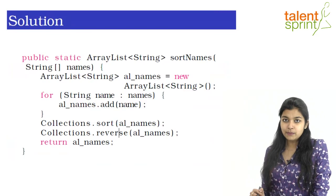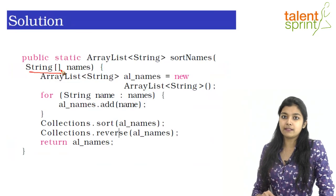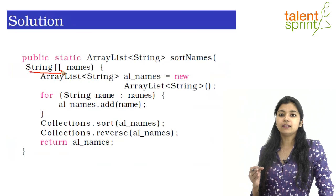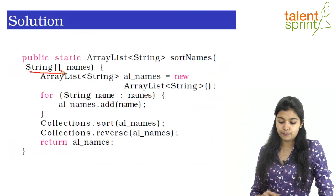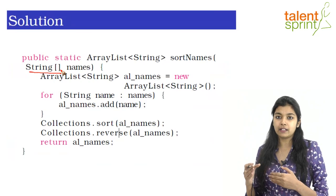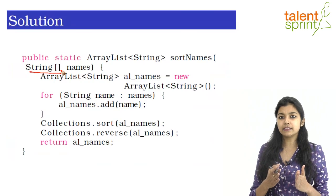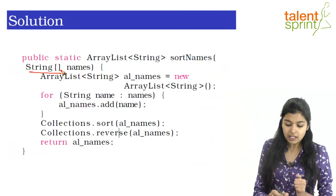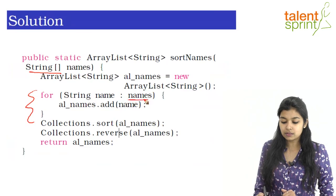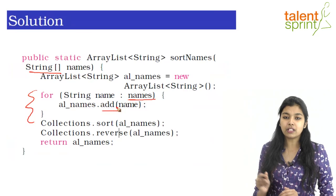We have written the function 'sortNames' which takes our string array of names as an input parameter. First, we start by creating an ArrayList. We then traverse through our string array and store all the names into this ArrayList using a for loop, adding each name one by one.